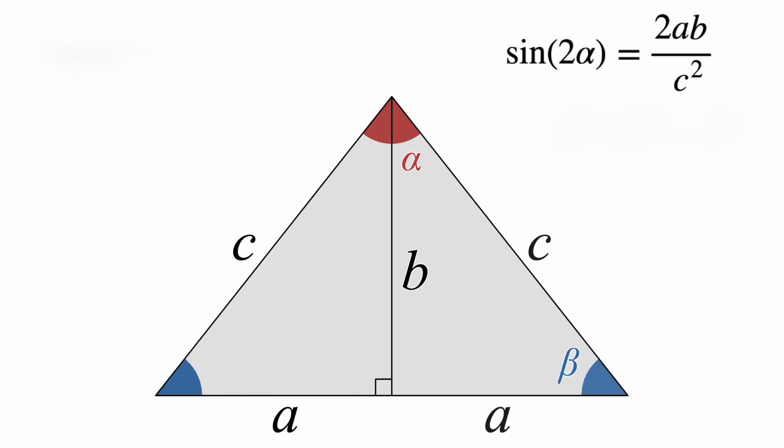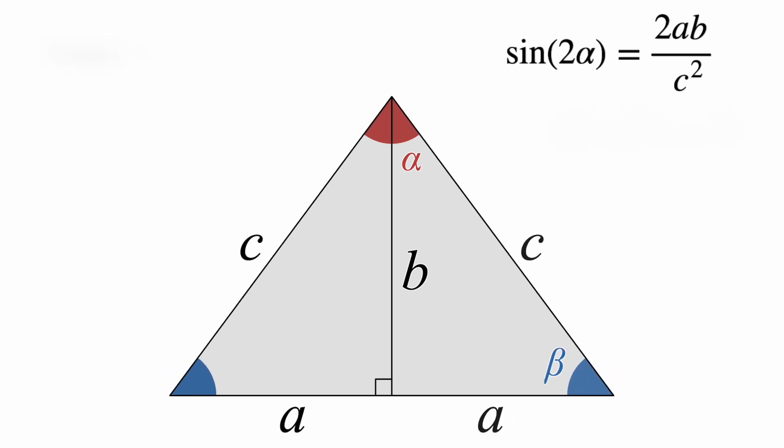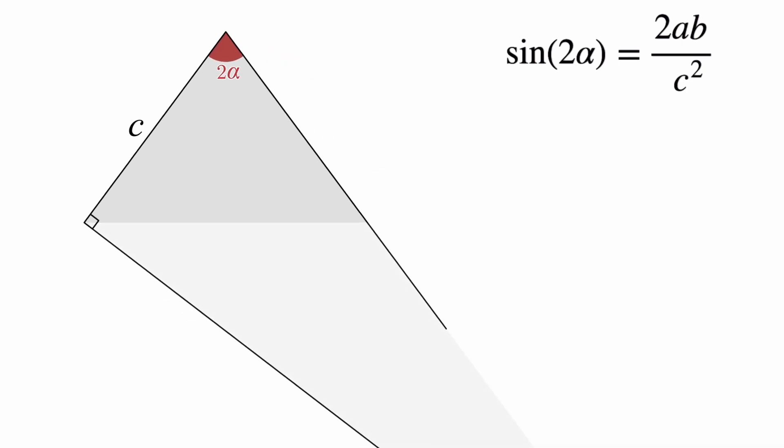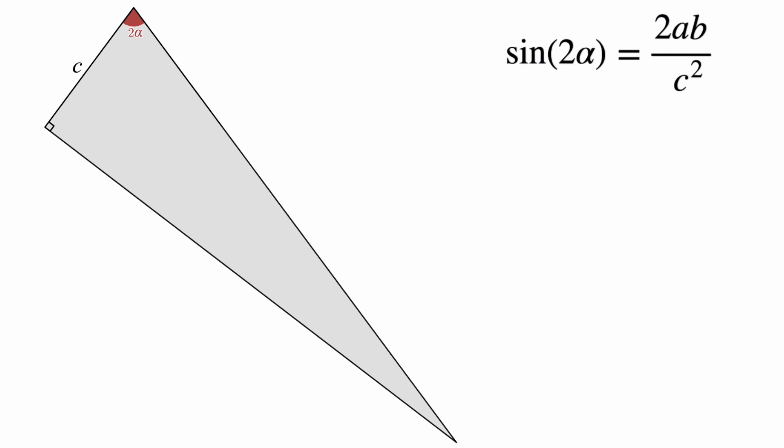For the rest of the proof, we'll look at the case where a does not equal b. And without loss of generality, we'll choose a to be the shorter of the two legs. For this case, the strategy is to construct another right triangle, which has 2 alpha as one of its acute angles. To do that, I'll draw a line perpendicular to the original triangle's hypotenuse. And then, extend the reflected triangle's hypotenuse until it meets that line.